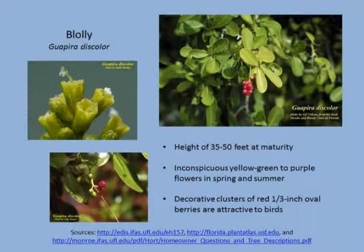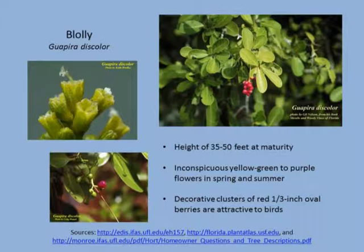Blolly is one you don't often hear of — I tried to include a couple of unique ones. You can find it for sale at some native nurseries. It reaches 35 to 50 feet in height. The flowers are definitely not showy, but it gets nice clusters of red berries that birds enjoy.